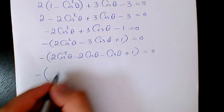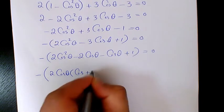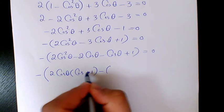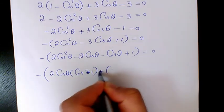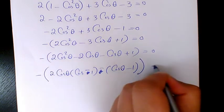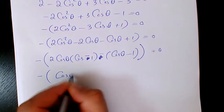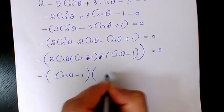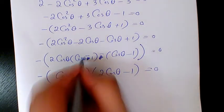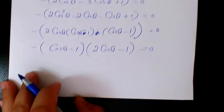Grouping the terms, we get 2 cosine theta times (cosine theta minus 1) minus 1 times (cosine theta minus 1) equals 0, which factors to (cosine theta minus 1)(2 cosine theta minus 1) equals 0.